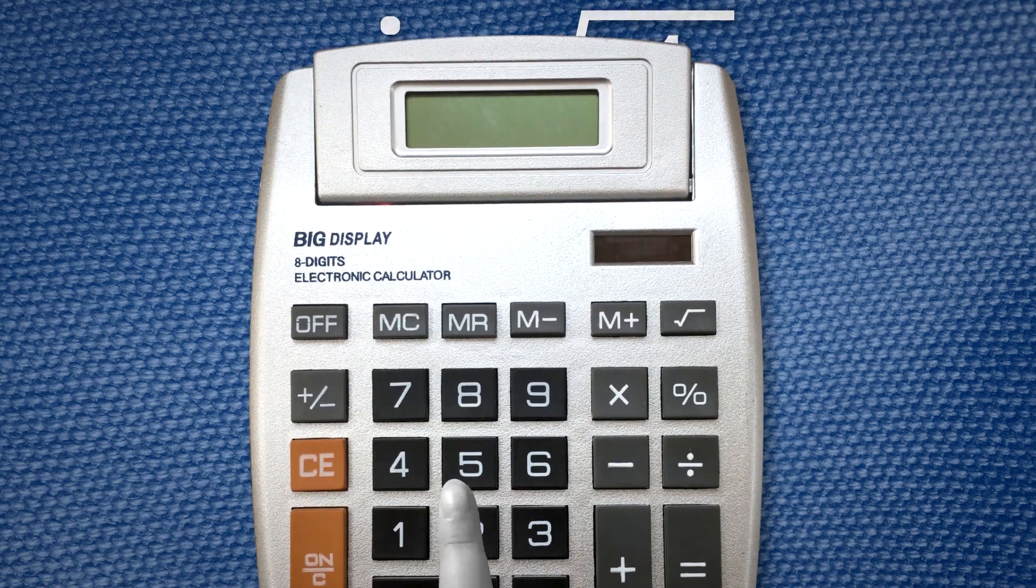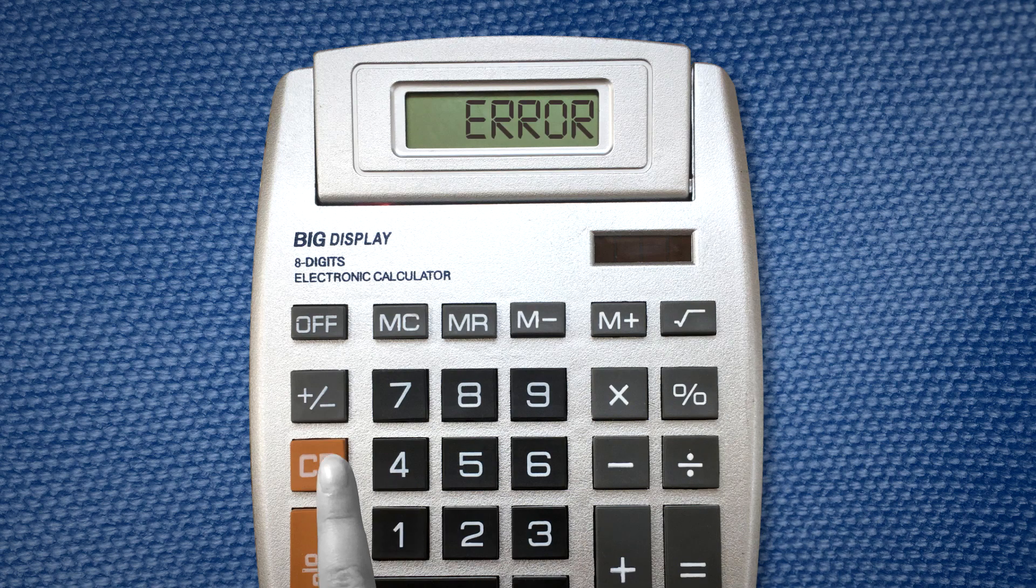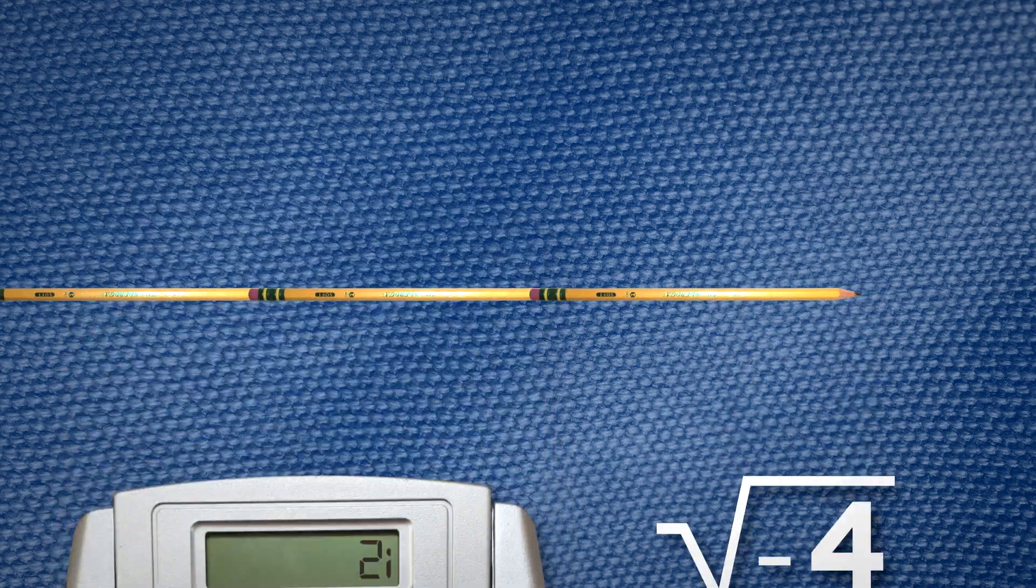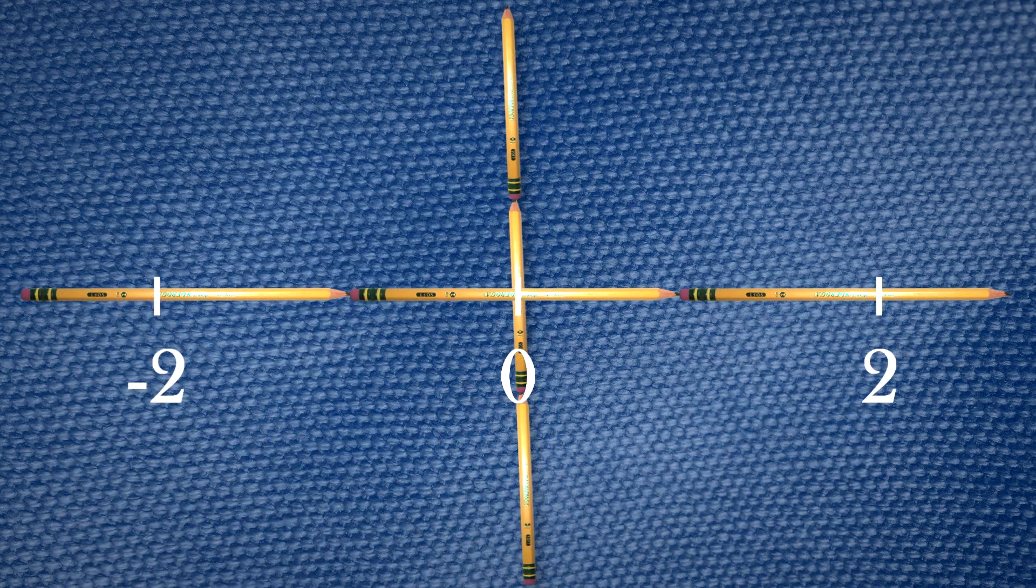Imaginary numbers like i allow us to play with values that are usually not allowed by the regular rules in mathematics, such as taking the square root of a negative number. Including i also has the effect of creating a two-dimensional number line.